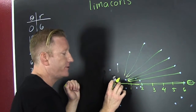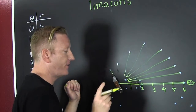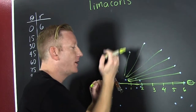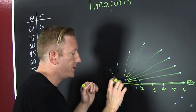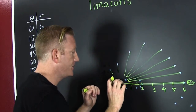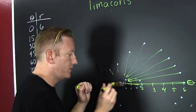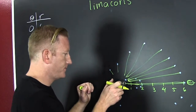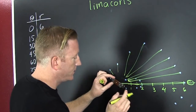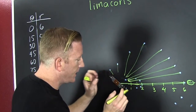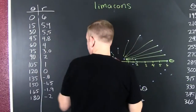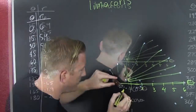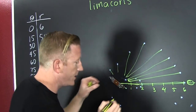At 105 degrees, we go out this far. And this is the interesting part — our r is getting smaller and smaller until it's nothing. Then what happens? Our r goes negative. Our r is right here. When it goes negative right there, 135 degrees — so at 135 degrees, it goes there.